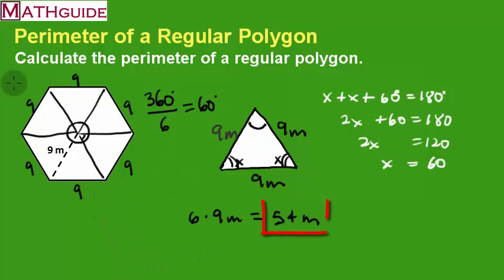54 meters. And there you go. So, if you said 54 meters is the perimeter, you are correct. That 54 is the perimeter of this regular hexagon. Make sure you go back to mathguide.com. Check out all our interactive quizzes, instructional videos, and lessons. Take care.